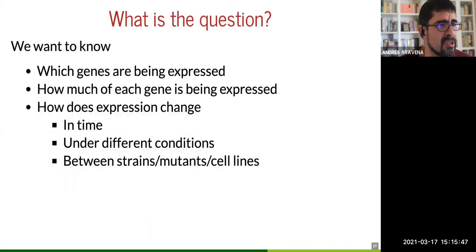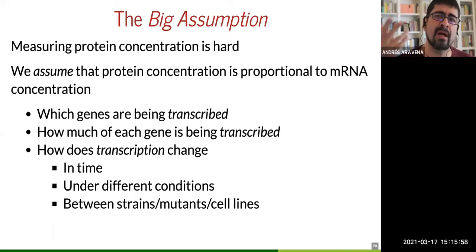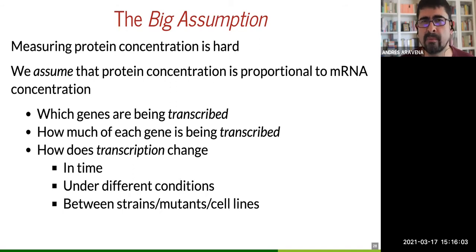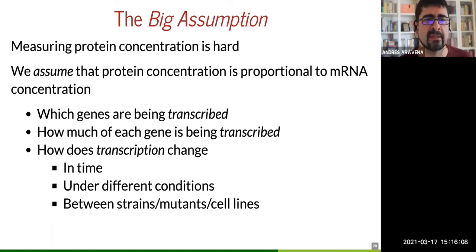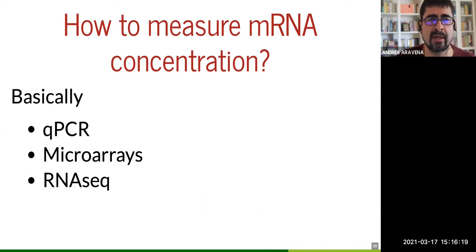We are identifying which genes are being transcribed, under the assumption that if you have the messenger RNA you will have the protein. The basic ways to measure RNA concentration are qPCR, microarray, and RNA-seq. Maybe there are others, but these are the dominant ones.